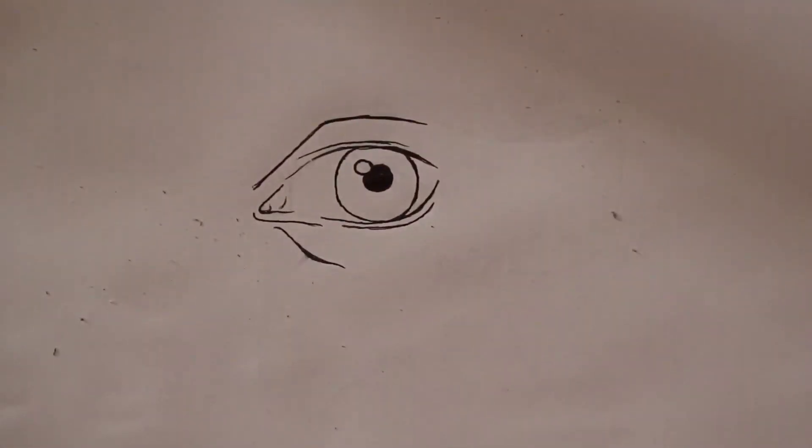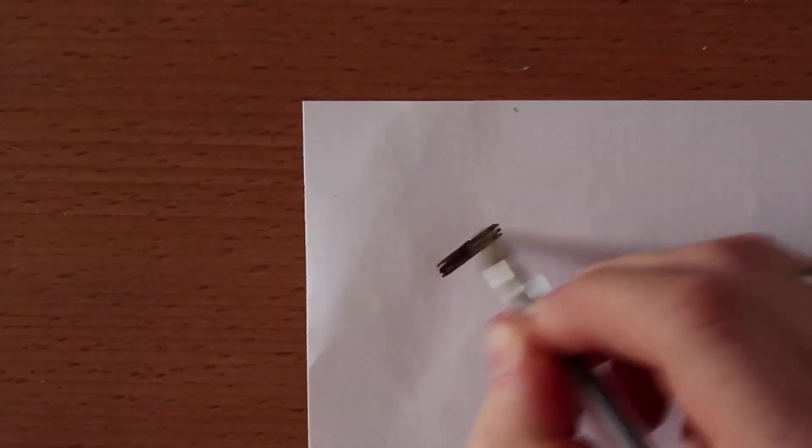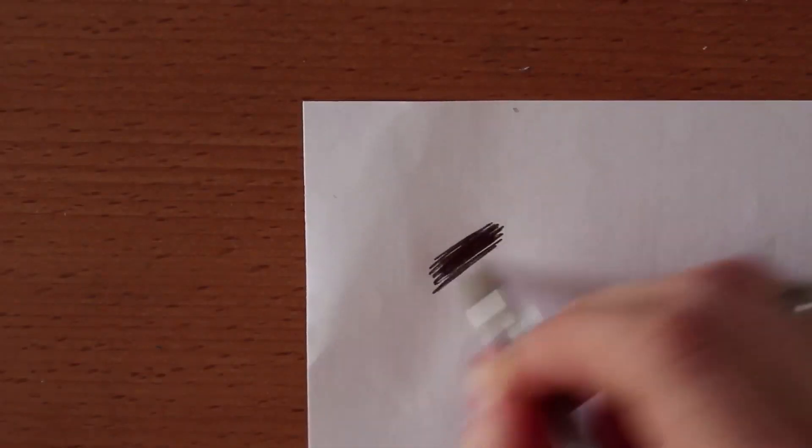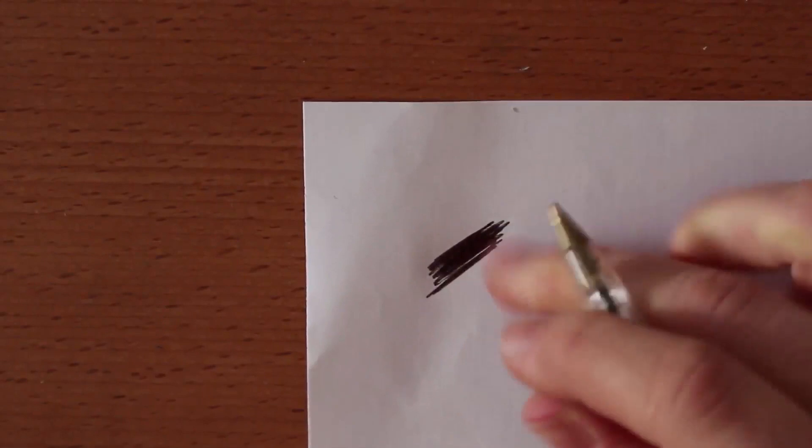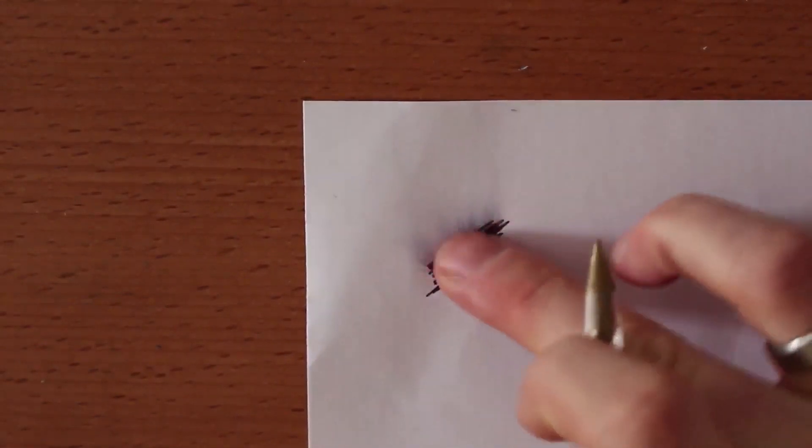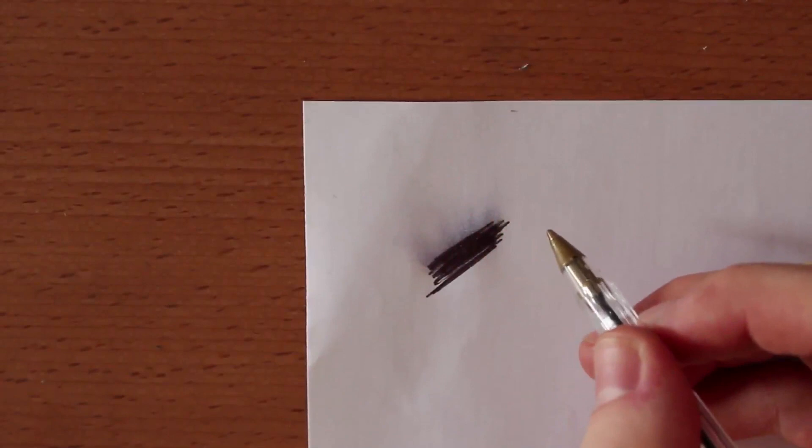If you use a lot of biro in one concentrated area then before it's dried it can smudge so you have to be careful with where you place your hand. This does mean that you're able to make some rudimentary blending effects but overall biro really can't blend in a way at all similar to how pencil can.